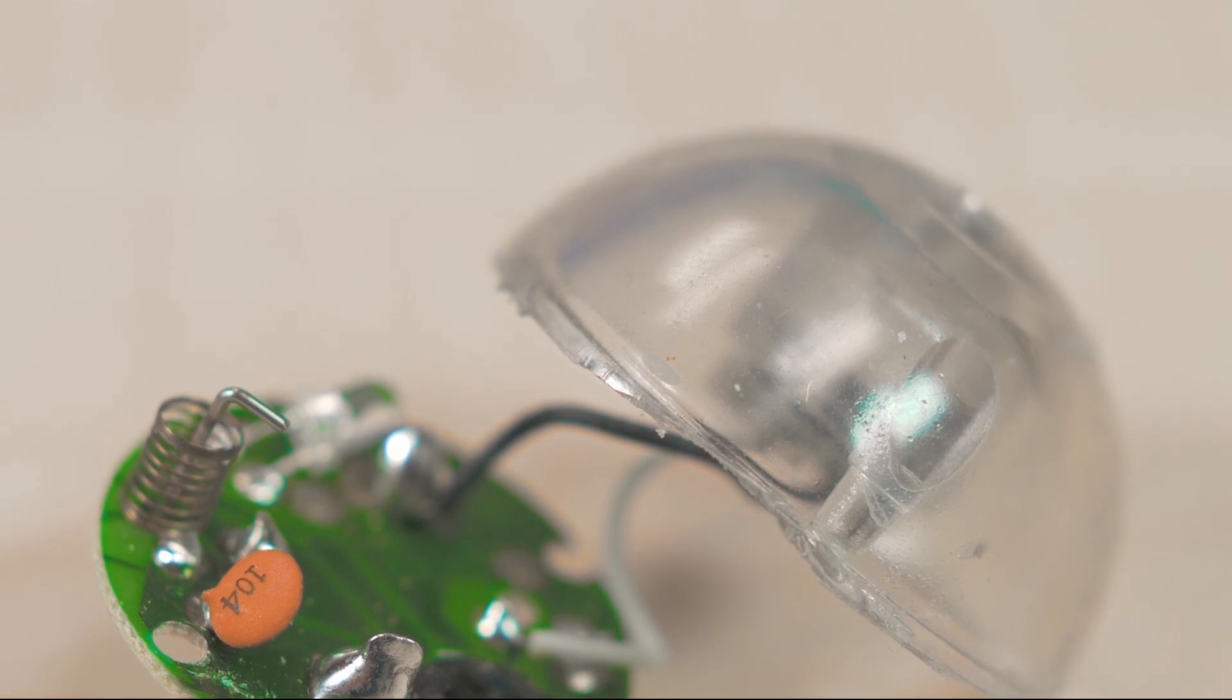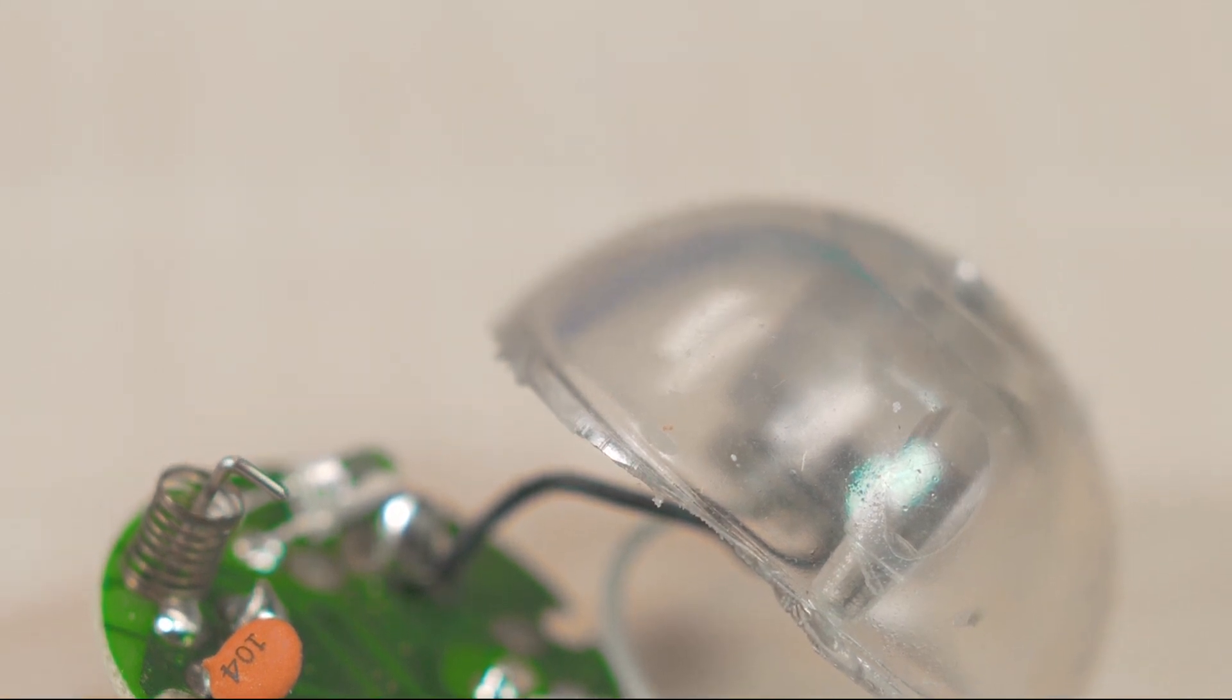If we pry off the epoxy, we destroy the chip in the process. And looking at the die itself won't tell us much about how it works unless we bring in a scanning electron microscope, and that's a multi-million dollar instrument - we don't quite have the budget for that.